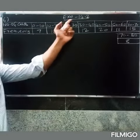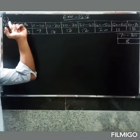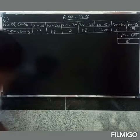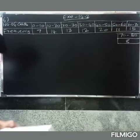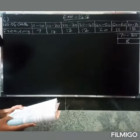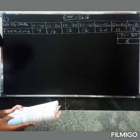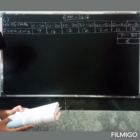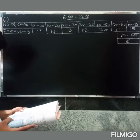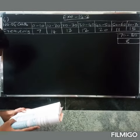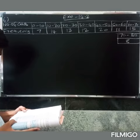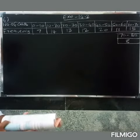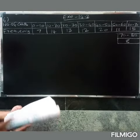Welcome friends. In this problem, a student noted the minimum number of cars passing through a spot on the road for 100 periods, each of three minutes, and summarized it in the table given below. Find the mode of the data.